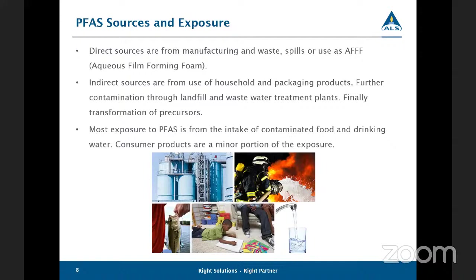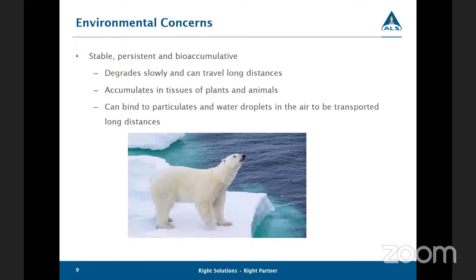Most exposure to PFAS is from the intake of contaminated food and drinking water. Consumer products are a pretty minor portion of the exposure pathway. These compounds are stable, persistent, and bioaccumulative, and they are found pretty much everywhere in soil, groundwater, and air. The compounds generally have low volatility. However, they can travel great distances bound to particulate.